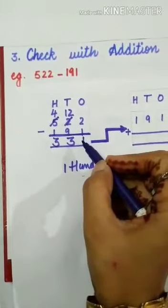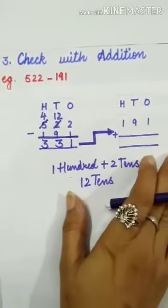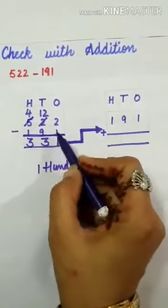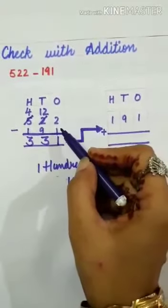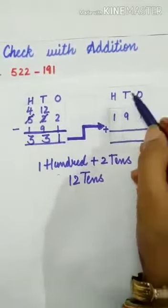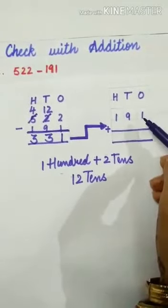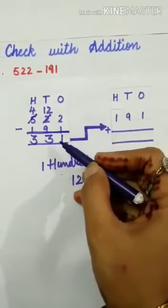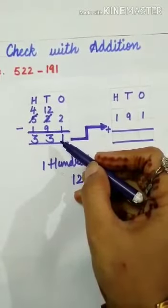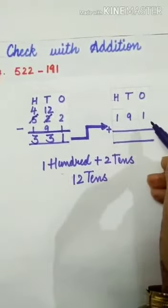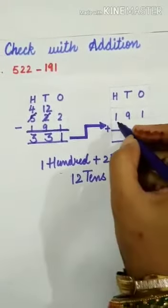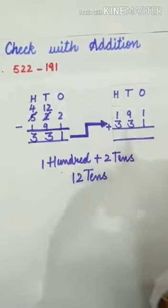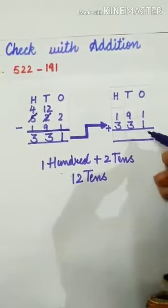We can check subtraction's answer. For this, what to do first? The number which we have subtracted, that is here 191, write that number in the ones, tens, and hundreds column. And how much to add? The number we get after subtraction. Write down 331 here. Now add these two numbers. Let us see what happens.